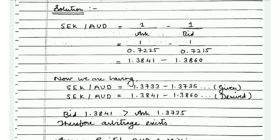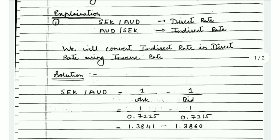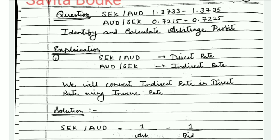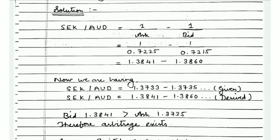Now we place the values at the respective positions. From the question, the AUD/SEK bid rate is 0.7215 and the ask rate is 0.7225. So the SEK/AUD bid = 1 ÷ 0.7225, and the SEK/AUD ask = 1 ÷ 0.7215.